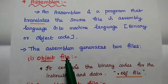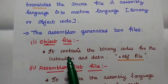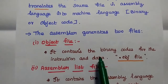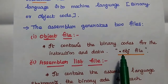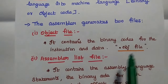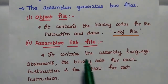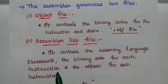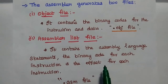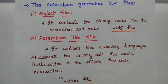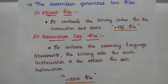The assembler generates two files. The first one is the object file, which contains the binary codes for the instructions and data — it is denoted as a .obj file. The next one is the assembler list file, which contains the assembly language statements, the binary code for each instruction, and the offset for each instruction. This file is named with a .asm extension.